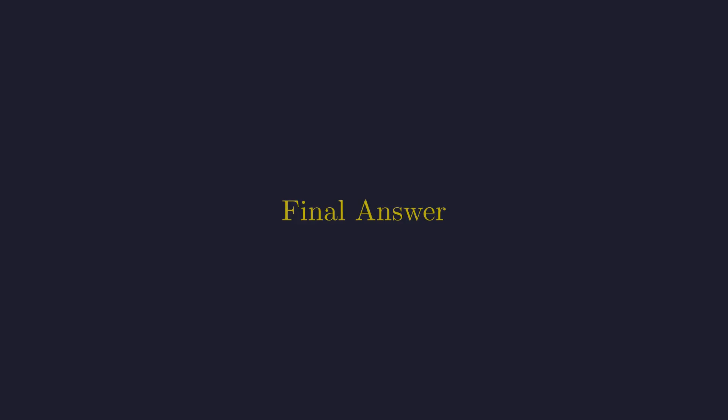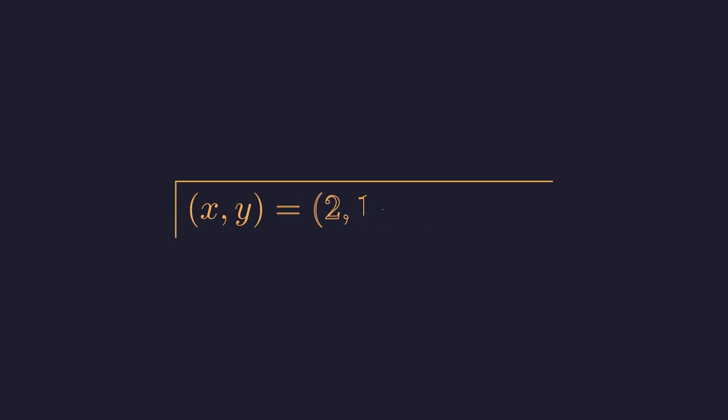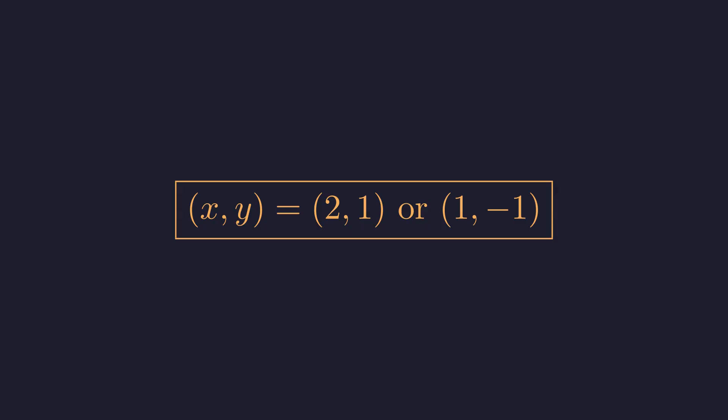The system has exactly two solutions: x equals 2, y equals 1, and x equals 1, y equals negative 1. What started as a complex system of rational equations was elegantly solved using complex number algebra.